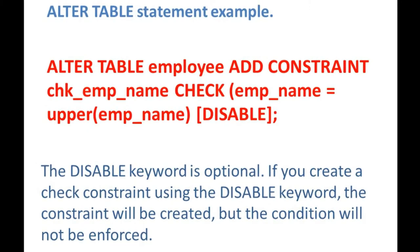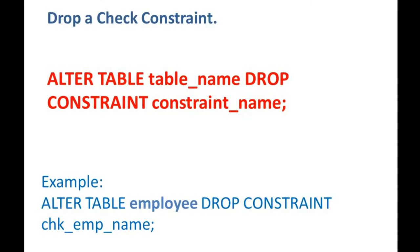The next point is how to drop a constraint. If you want to remove any business logic or remove a validation, you can do that. To drop a check constraint, the syntax is: ALTER TABLE table_name DROP CONSTRAINT constraint_name. So DROP CONSTRAINT is the command followed by the constraint name. For example: ALTER TABLE employee DROP CONSTRAINT chk_emp_name.